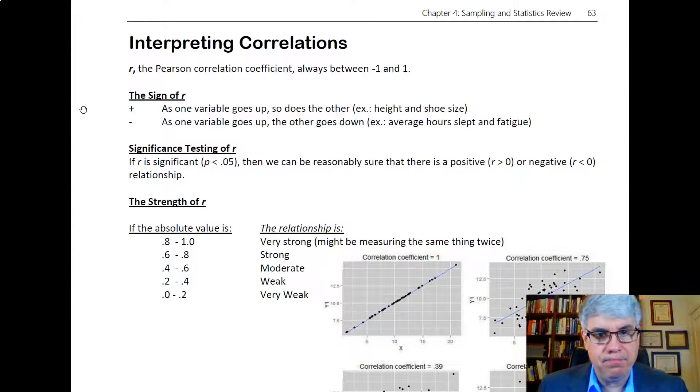Or the example of height and shoe size: taller people tend to have larger shoe sizes. That would be a positive correlation, and so it'd be between zero and one.